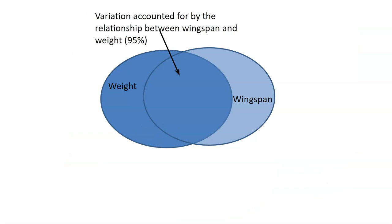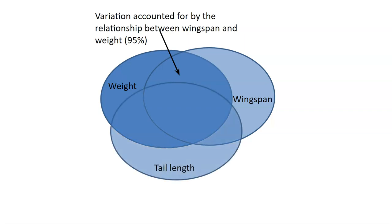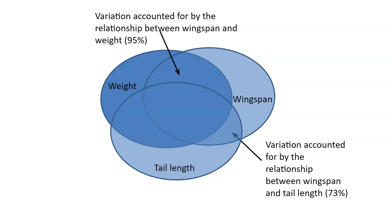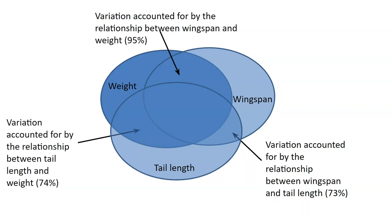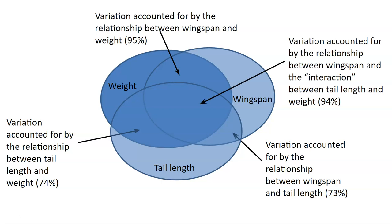Let's keep thinking about that concept and add another variable to the mix — tail length. In addition to the variation accounted for by the relationship between wingspan and tail length, which turns out to be 73%, we also know the variation accounted for between the two independent variables tail length and weight, which turns out to be 74%. We also have the variation accounted for by the relationship between wingspan and what we might call the interaction between tail length and weight, and that value would be 94%. You can begin to see that using multiple variables together may better our prediction for the falcon.